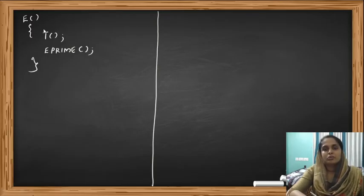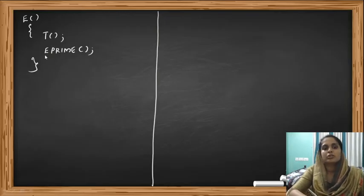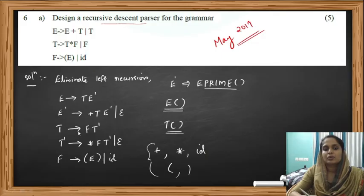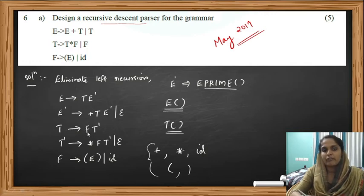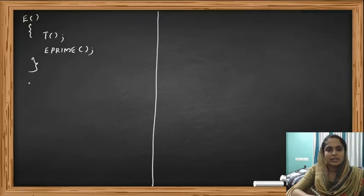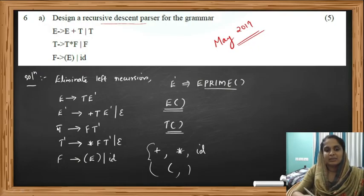Now we have to write the procedure for T. The production for T is T → FT'. So when we call the procedure for T, we first call the procedure for F, then we call the procedure for T prime. That's all for the symbol T — T → FT' — so we can close that procedure for T.